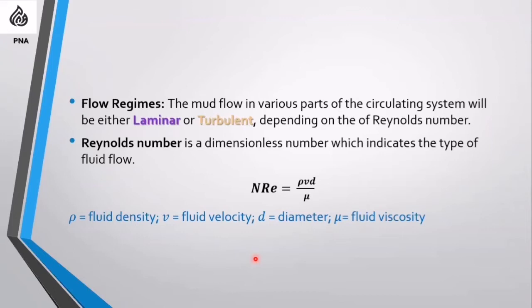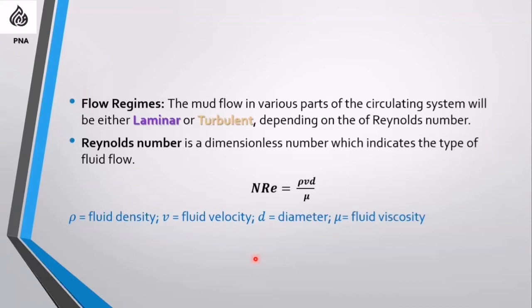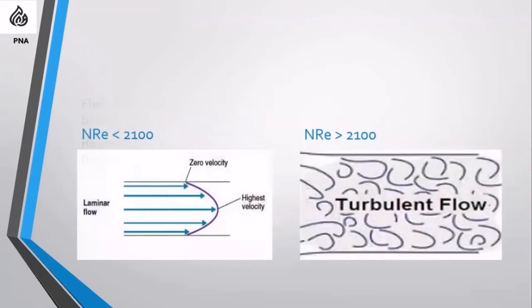When calculating the Reynolds number, the fluid velocity is the annular velocity, and the diameter used is the difference between the hole diameter and the outer diameter of the drill pipe or drill string. If the Reynolds number is less than 2100, the flow regime is laminar — with the highest velocity at the center and friction at the wall.